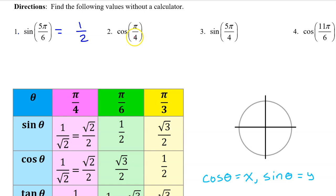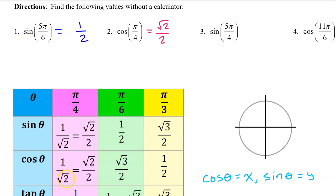For number 2, cosine of π/4 is just right on the chart. Cosine of π/4 is √2/2, which is equivalent to 1/√2. Be comfortable with either version.